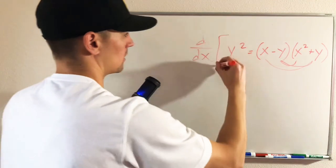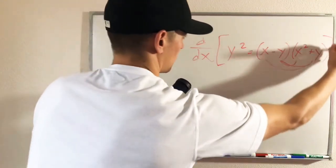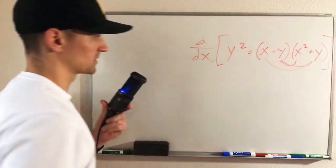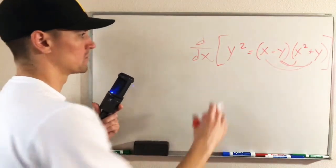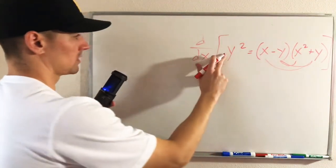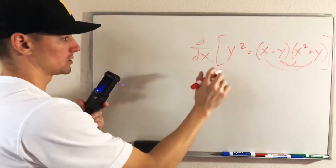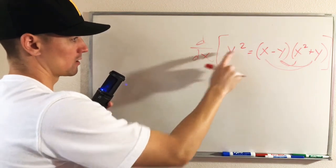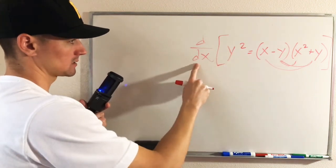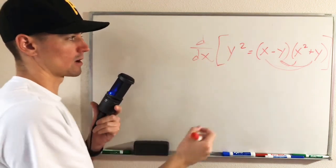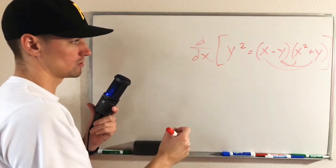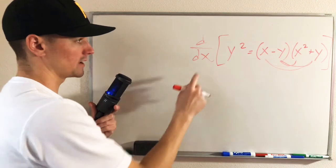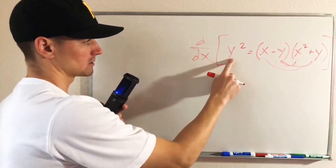So what we can do is go ahead and take the derivative with respect to x of this entire equation, both sides. For this left side of our equation, the derivative of y squared with respect to x is actually going to require the use of the chain rule, because y is a function of x.